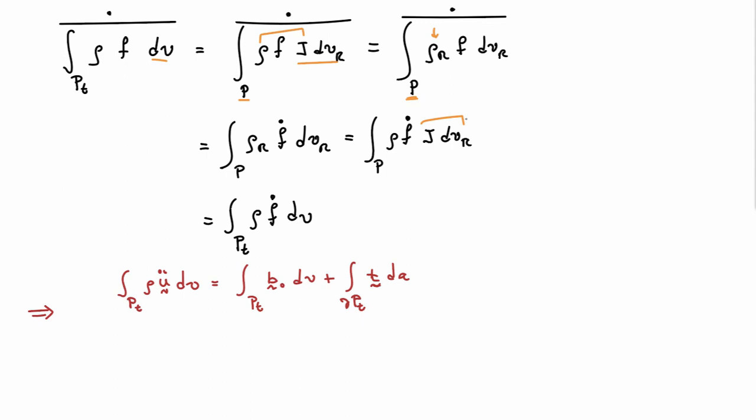If I do that to the linear momentum balance equation, the time derivative will go on the u dot, so I'll get u double dot, so I get rho u double dot, density times acceleration integrated over the part I'm looking at, equals the force acting on it. And I can do the same thing for the angular momentum balance. I get this expression here where I end up with rho u double dot in the integrand on the left-hand side. To get this integrand here, it's almost as straightforward as I showed above.